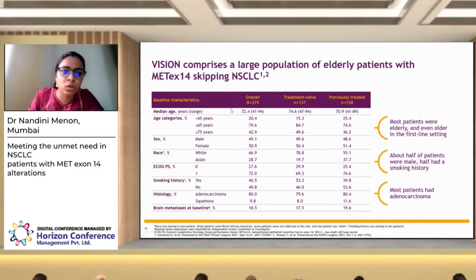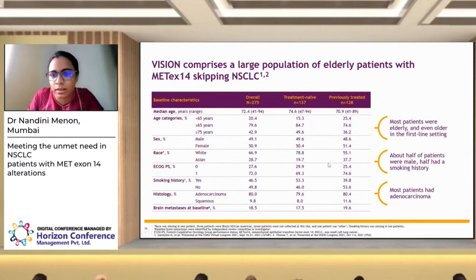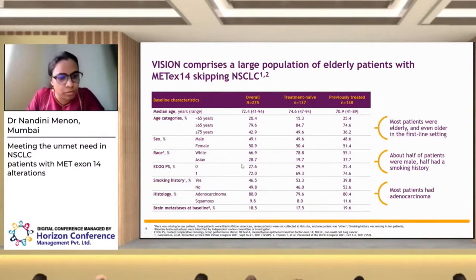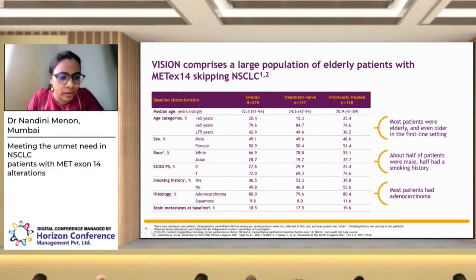Most patients were over 70 years, with a median age of 72 years overall — 74 years in newly diagnosed and 71 in previously treated patients. Approximately 80% of patients were more than 65 years old. There was equal male-female distribution with no gender predominance. The study was conducted in the West and East Asia (Japan, Korea, China), with two-thirds from Western populations. Patients were fit with PS 0-1; 80% had adenocarcinoma. Well-controlled brain metastases were allowed, present in approximately 18.5% overall.